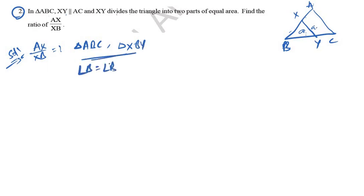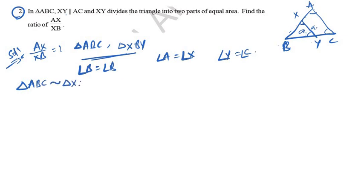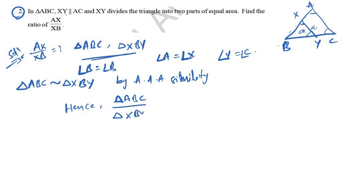For the solution: triangles ABC and XBY are similar. Angle B is equal for both triangles. Angle A equals angle X, and angle Y equals angle C. By Angle-Angle-Angle similarity, triangle ABC is similar to triangle XBY. From this, area of triangle ABC / area of triangle XBY = AB² / XB².